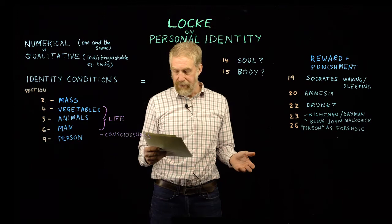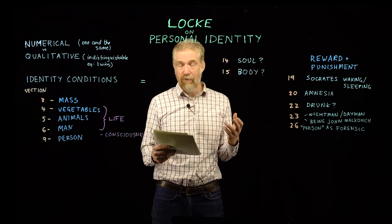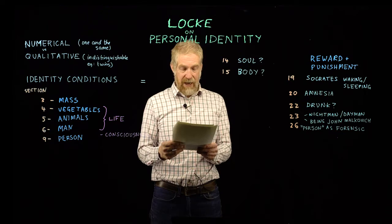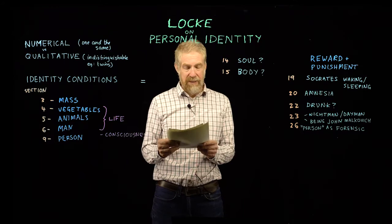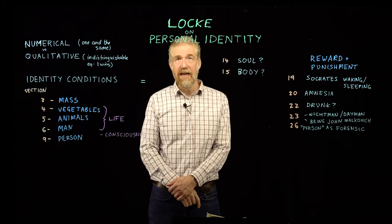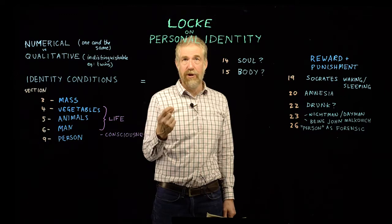Let's look at the example he gives in section 4. He says: 'That being then one plant which has such an organization of parts in one coherent body, partaking of one common life, it continues to be the same plant as long as it partakes of the same life, though that life be communicated to new particles of matter vitally united to the living plant.' So: you take an acorn, plant it, and 30 years later you have an oak tree. Is the acorn the same plant as the oak tree?